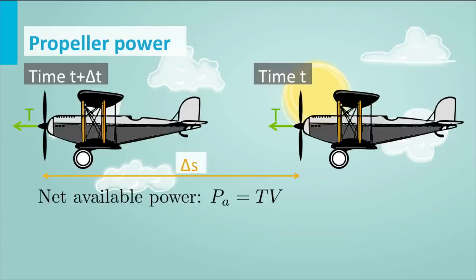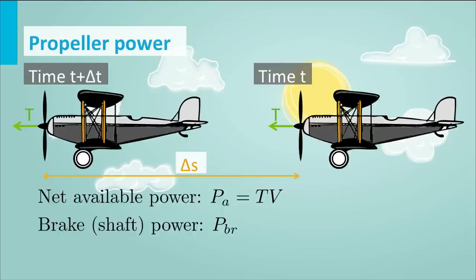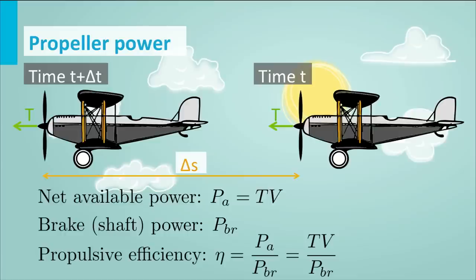This power available is not the same as the power generated by the engine. After burning fuel and going through the cycle of compression and expansion, the engine delivers shaft power to the propeller, which is higher than the propulsive power we get out. Energy is lost both in converting heat into work and again in converting shaft power into propulsive power. Therefore we define the propulsive efficiency of a propeller by dividing the power available (T times V) by the shaft power. This gives us a measure of how efficiently the propeller converts shaft power into propulsive power.